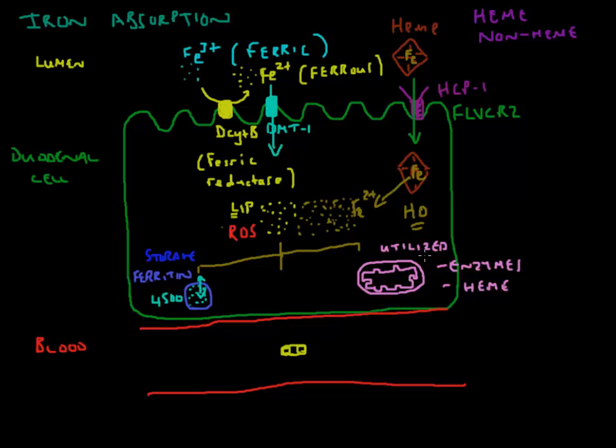We still haven't got iron that moved from here in the lumen of the gut to the bloodstream. The third part of the iron will be exported. There is another molecule, a very important molecule, on the surface of the duodenal cell on the so-called basolateral surface, and this is called ferroportin.